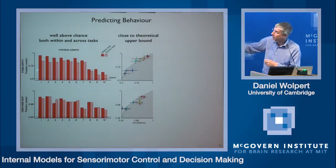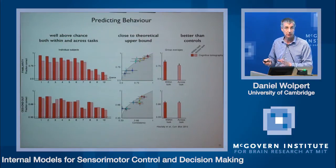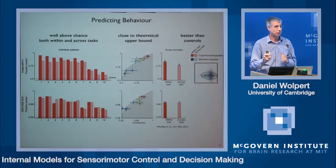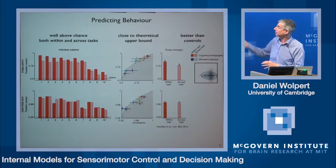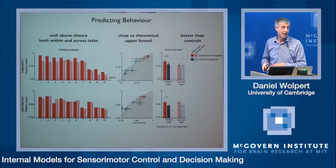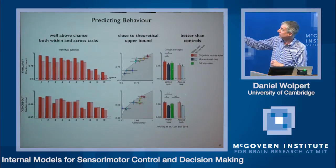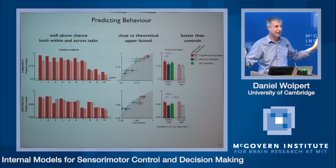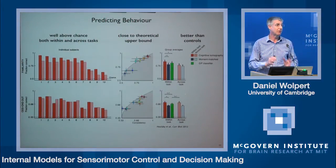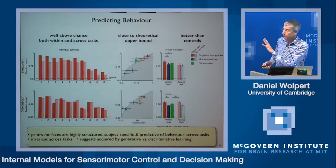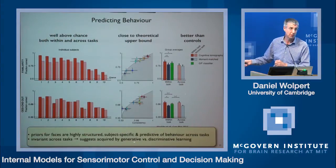Taking the prior extracted from familiarity and applying it to odd-one-out to predict across tasks, we also do very well — and vice versa. We can ask how important the fine details of these distributions are: if we replace our distribution with a bivariate Gaussian of the same mean and covariance and use that to predict, we do significantly worse, particularly within tasks. Comparing to a state-of-the-art Gaussian process classifier applied directly to the data, we do better for both situations with limited data. We can also show that in the odd-one-out task, subjects are not simply picking the most or least familiar face — that model fits the data very poorly. This suggests face priors are highly structured, subject-specific, and predictive across tasks, and their task-invariance strongly suggests acquisition by a generative rather than discriminative process.